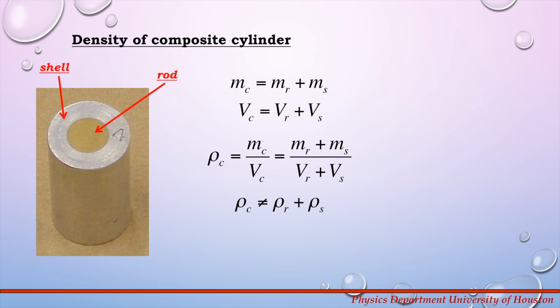In the last part of this experiment, you will learn how to calculate the density of a composite object, using the example of a composite cylinder. A composite cylinder is made from two different materials — in this case, a shell made from one material, the silver part, and an inside rod, the yellow part, made from a different material.